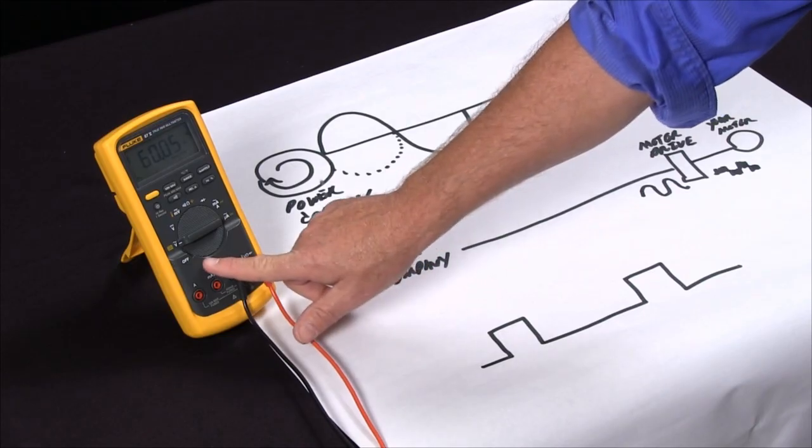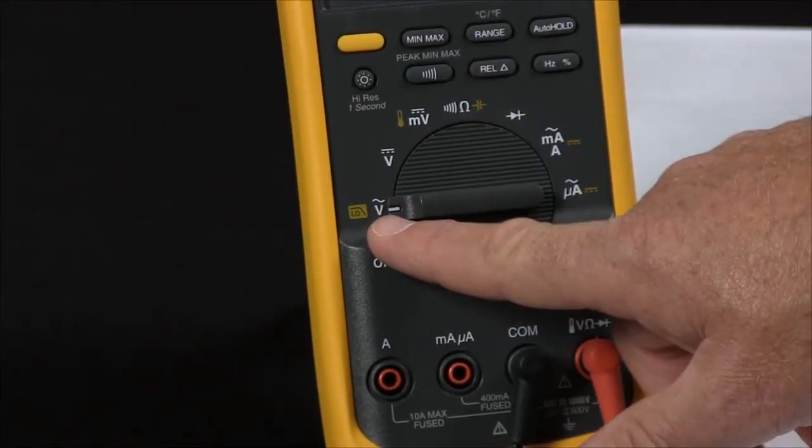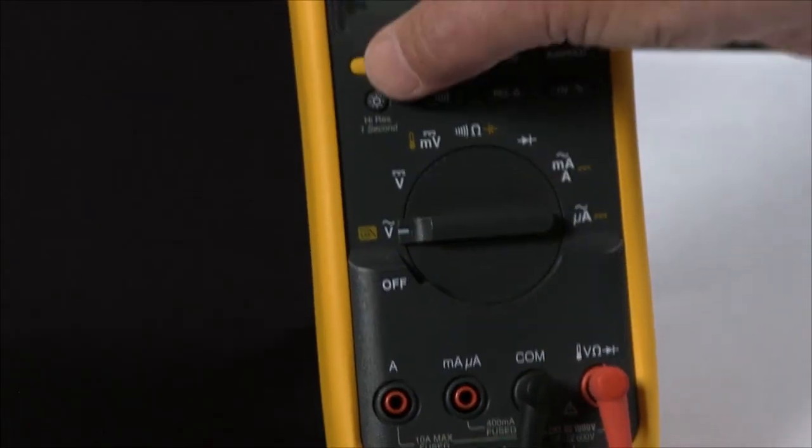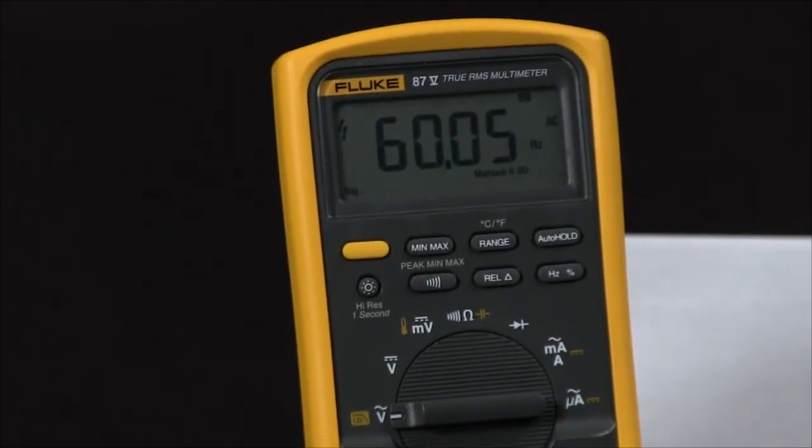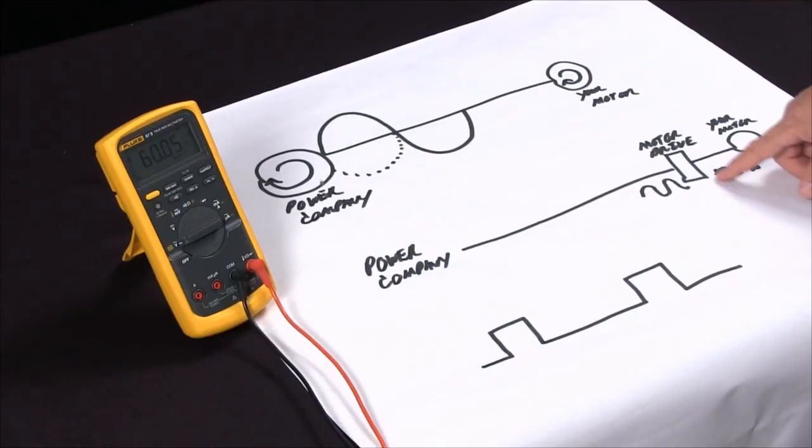We added a feature on the Fluke 87.5 and our 1587. If you see next to the AC volts, there's a low pass. By hitting this yellow button, I've now converted this into a special measurement mode that will measure this pulse width modulated signal accurately, giving you the frequency.